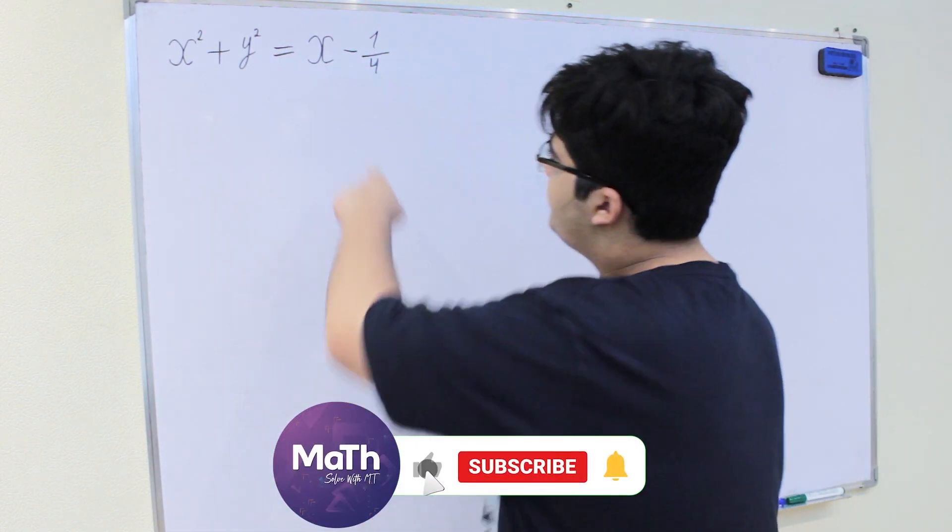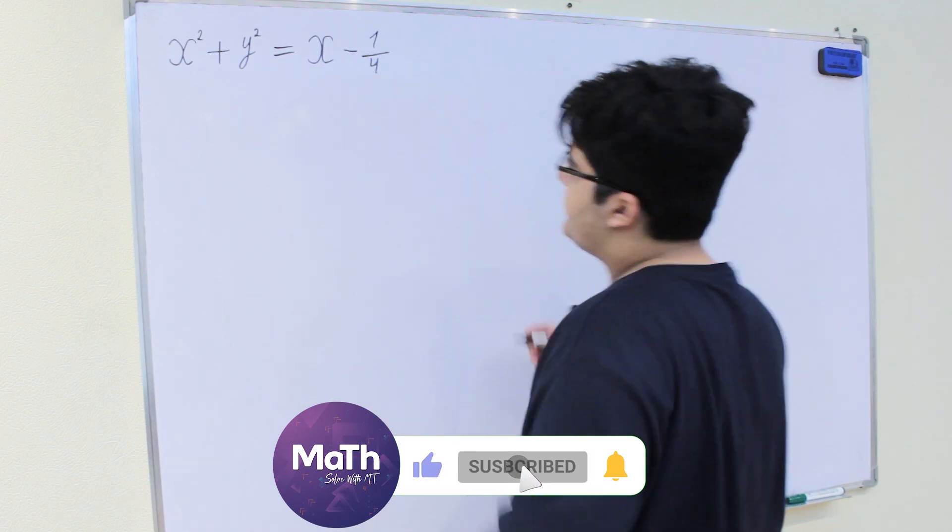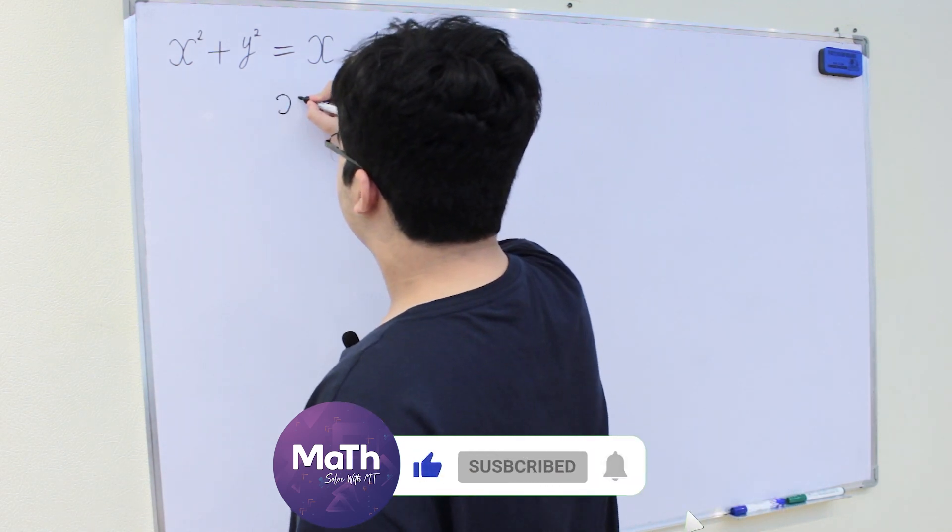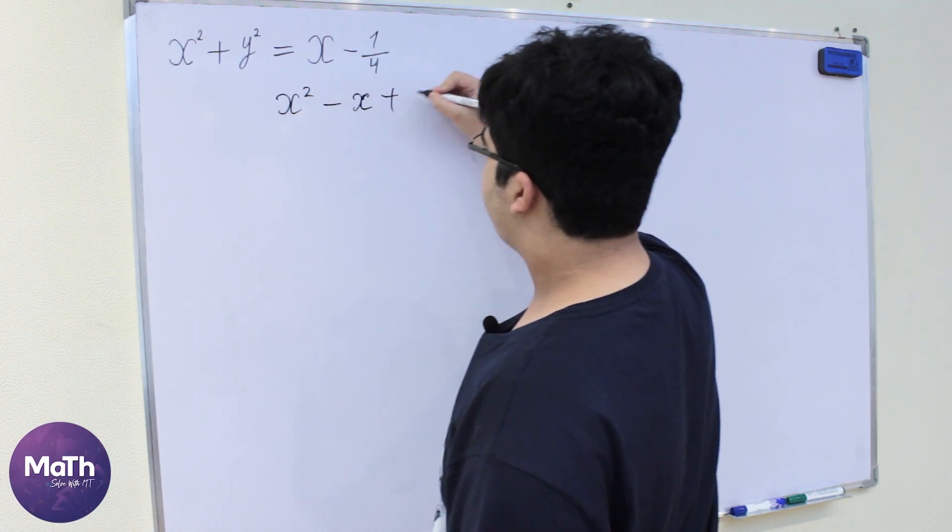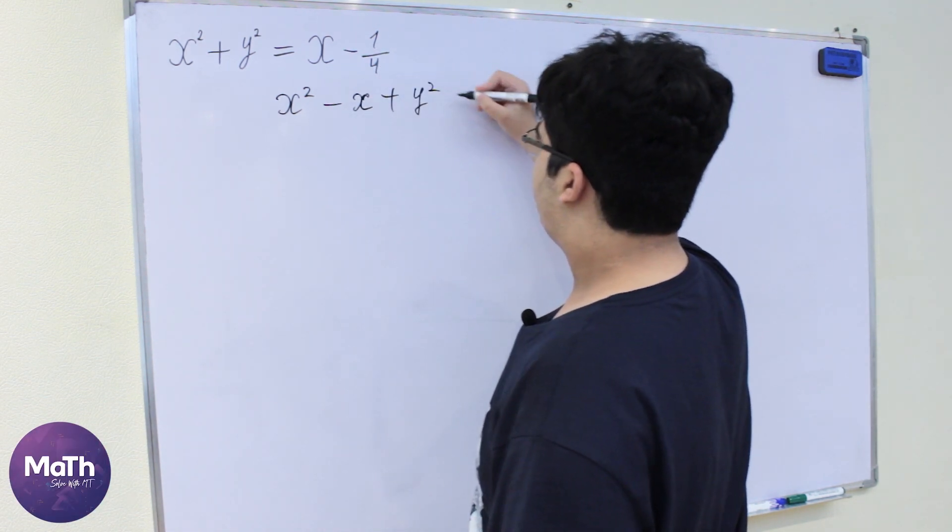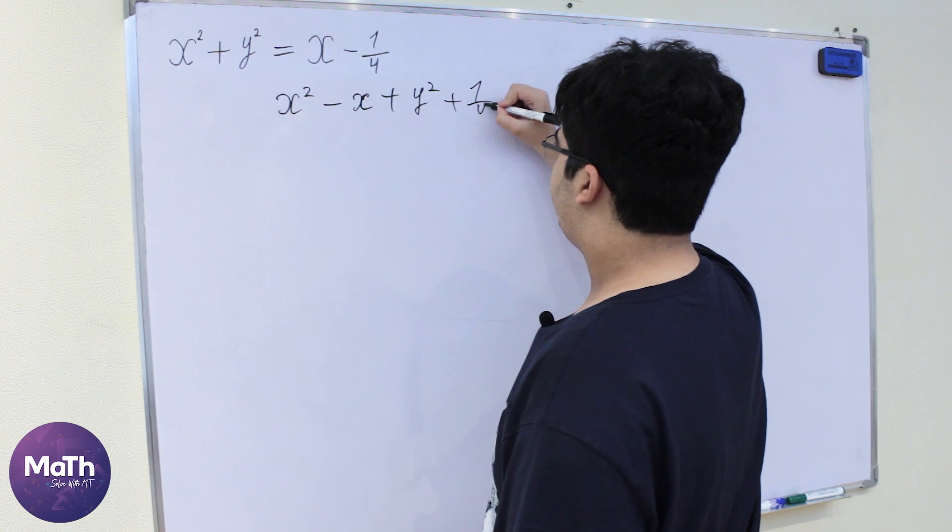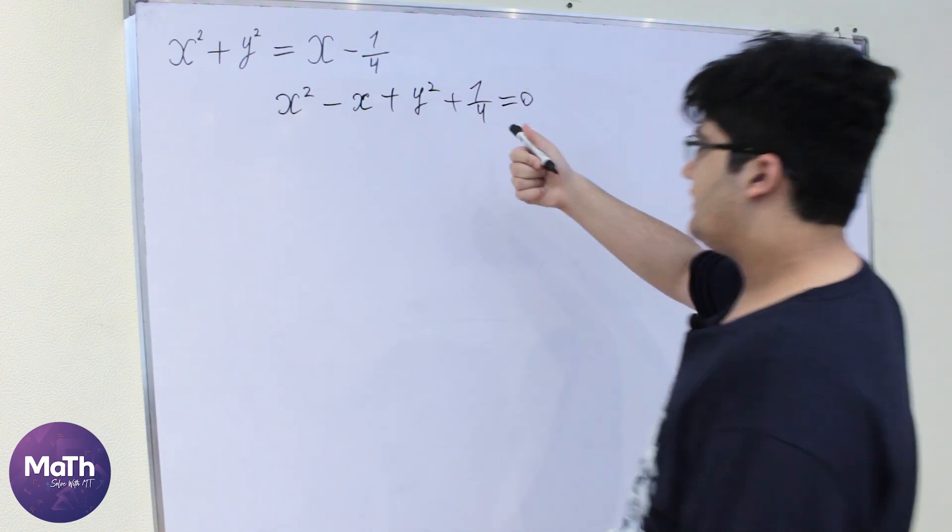So let's move this to the left side. So we'll have here x squared minus x plus y squared plus 1/4 and that is equal to 0.